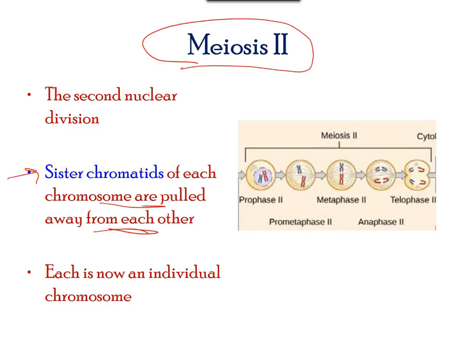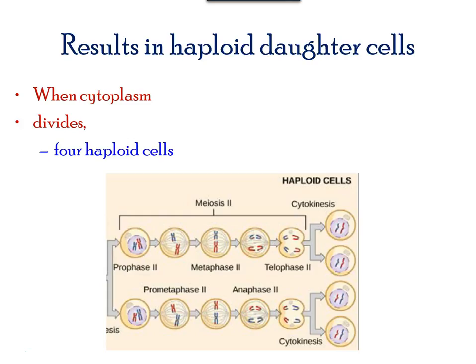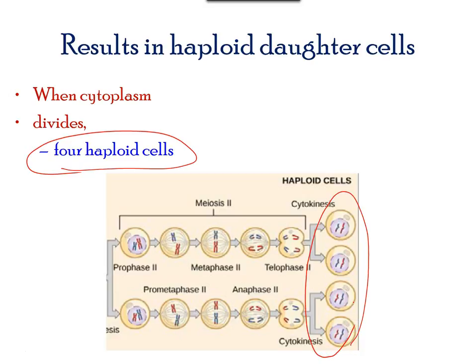Prophase II will separate out the sister chromatids. Telophase II will follow the same pattern and separate out the sister chromatids. At the end of telophase II, there are now four haploid cells with unduplicated chromosomes in each. The cytoplasm divides and results in four haploid cells. As seen in the image here, the four haploid cells have genetic variation and have half the chromosome number. Fertilization of these haploid cells will result in a diploid cycle.